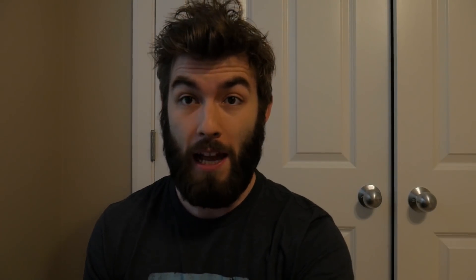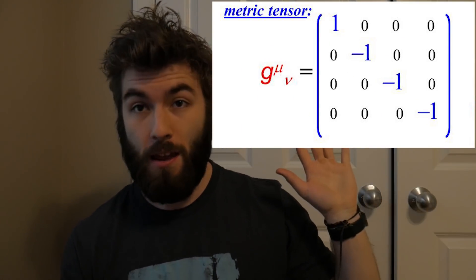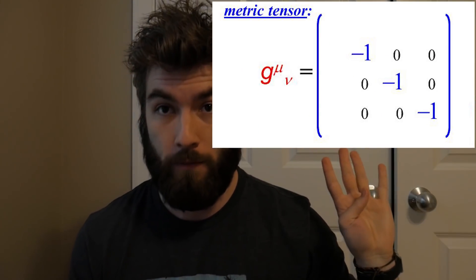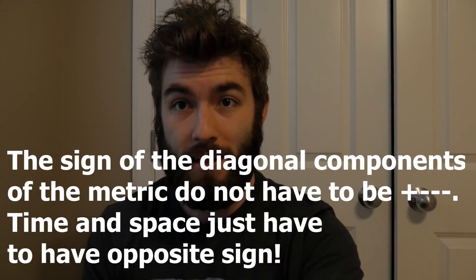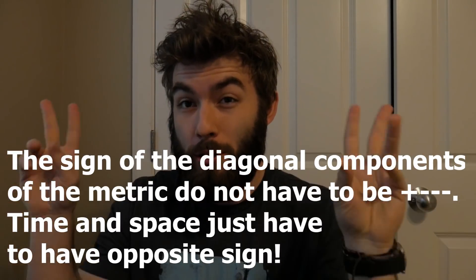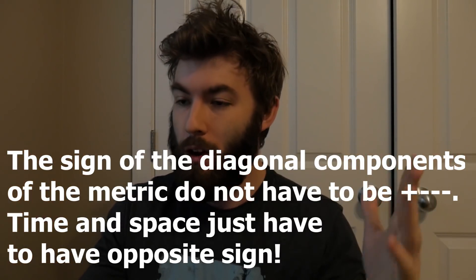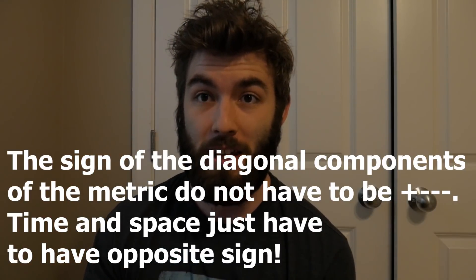If you're just working in flat space and you're not interested in the time part of the four-vector, then that just reduces to a normal three-vector — something that just has three components of space. When you're doing that in flat space, the metric just reduces to the identity matrix, which is a very fancy way of just saying you're multiplying each term by one. And for the most part, that's why it's not necessary to learn anything about tensors when you take a class in Euclidean geometry.